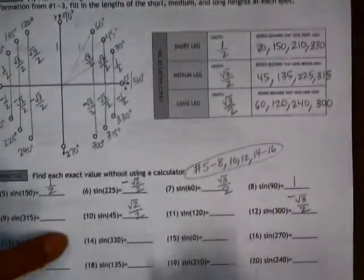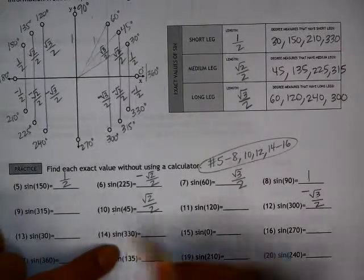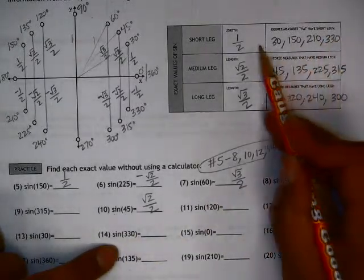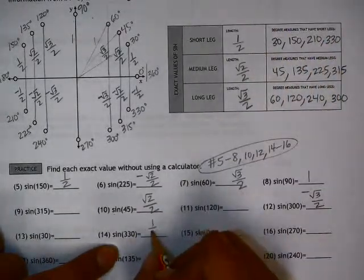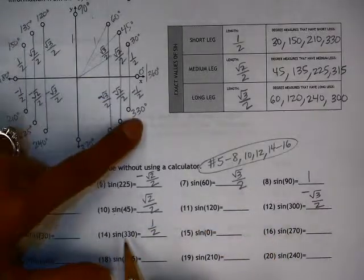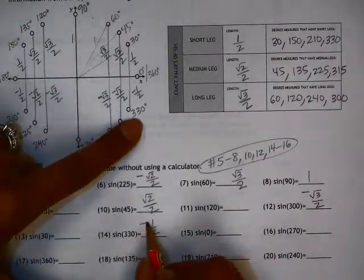Okay, let's skip to number 14. Sine of 330 degrees has the shortest leg of 1 half. At 330, we are below the x-axis, which is a negative.